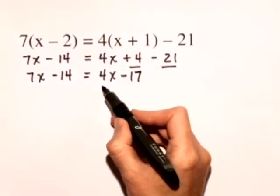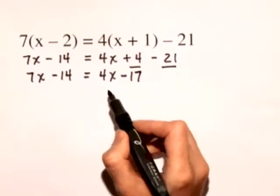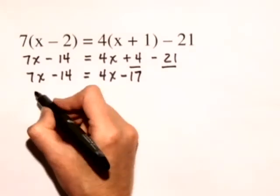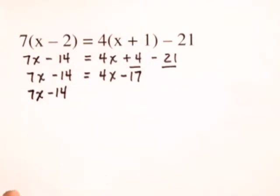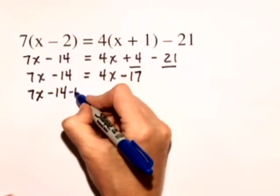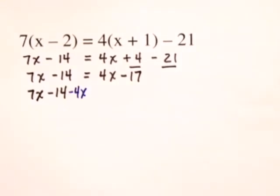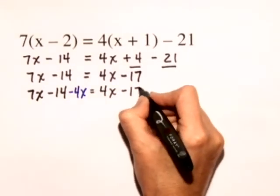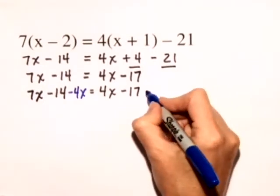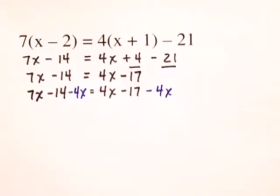Let's put the x terms on the left hand side so we'll do that by subtracting 4x from both sides. We have 7x minus 14 minus 4x is equal to 4x minus 17 again minus 4x.